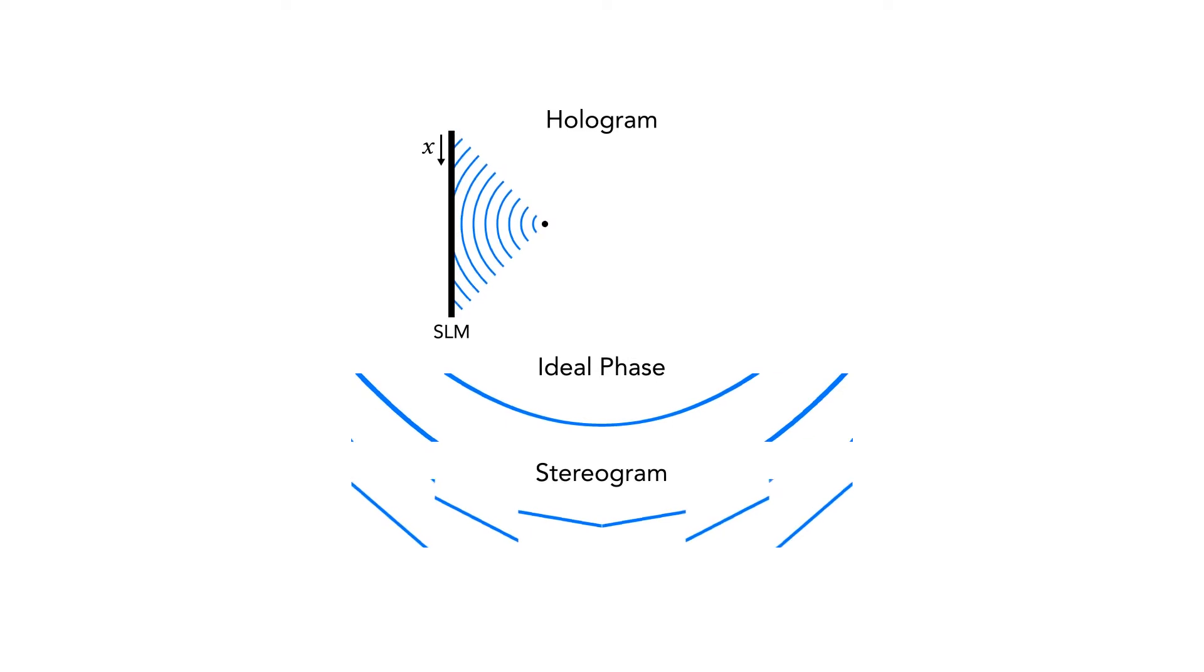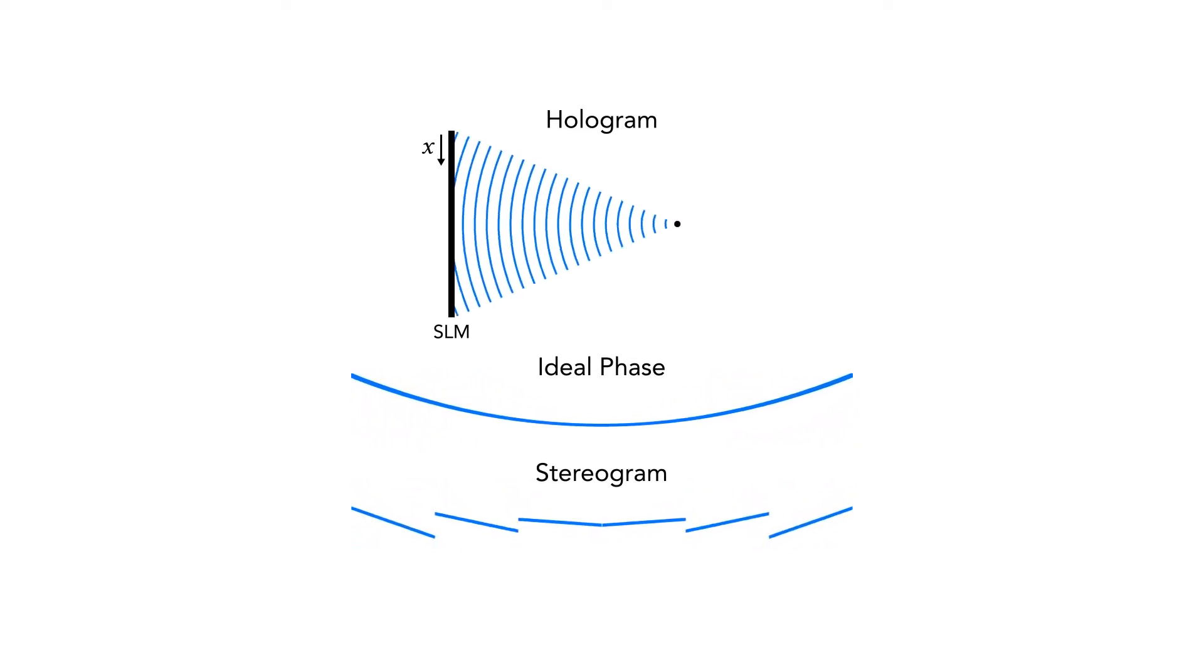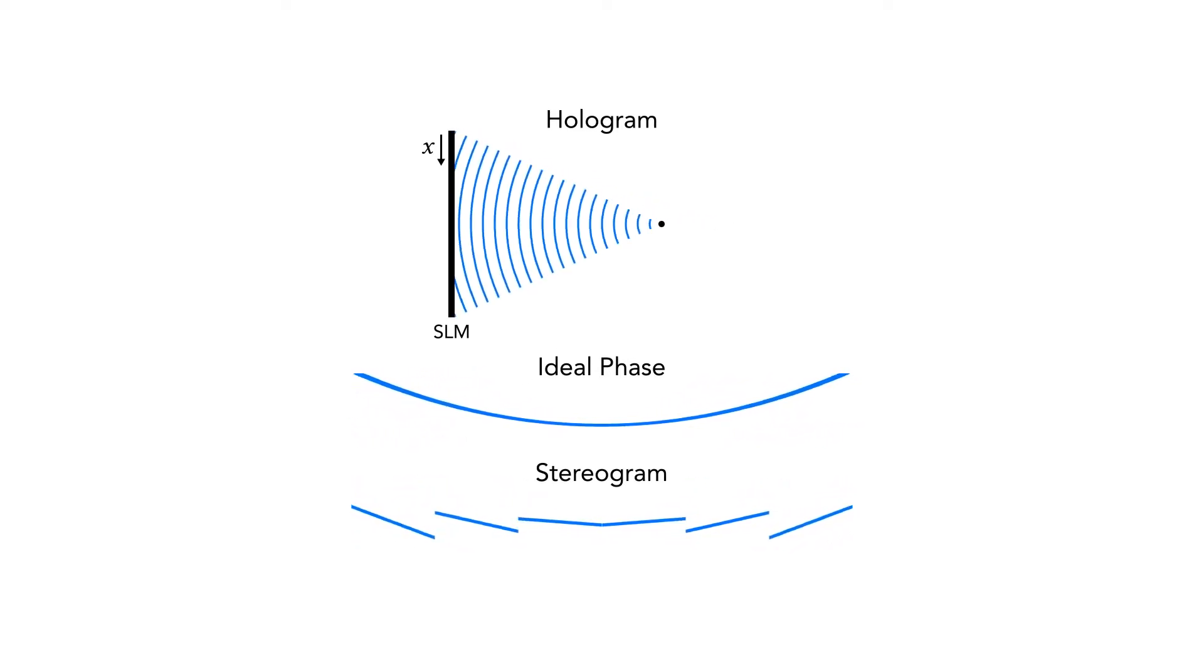Stereograms divide the SLM into a set of discrete Hohgels and approximate this phase profile with a set of linear phase functions, or plane waves.